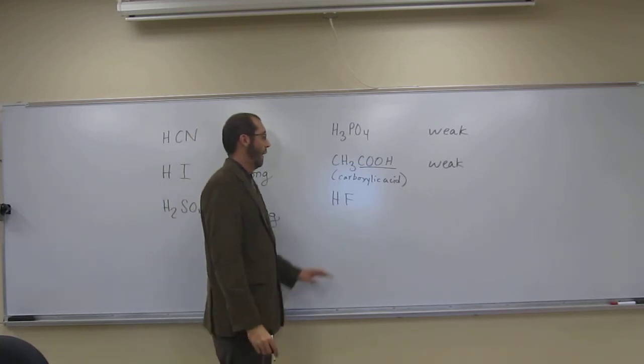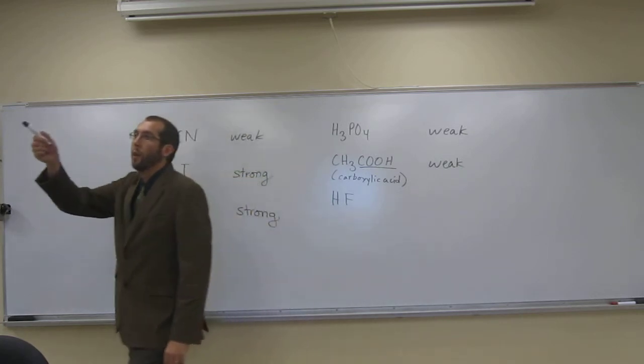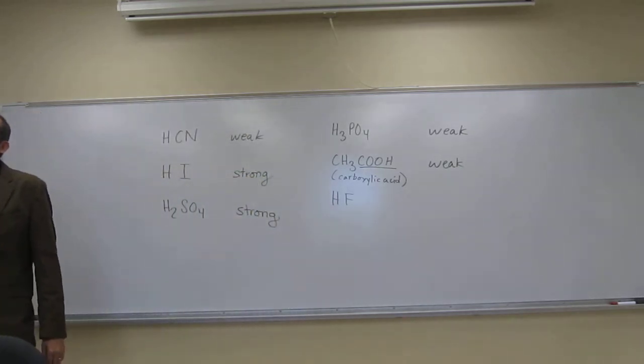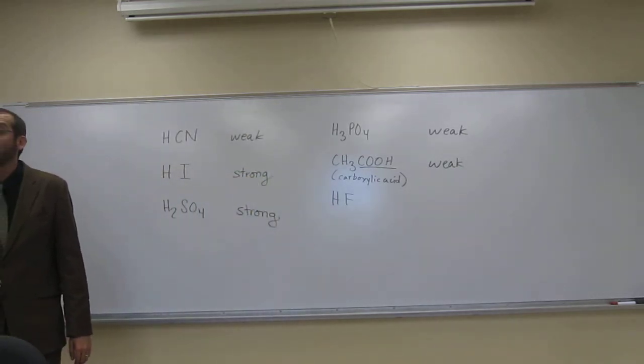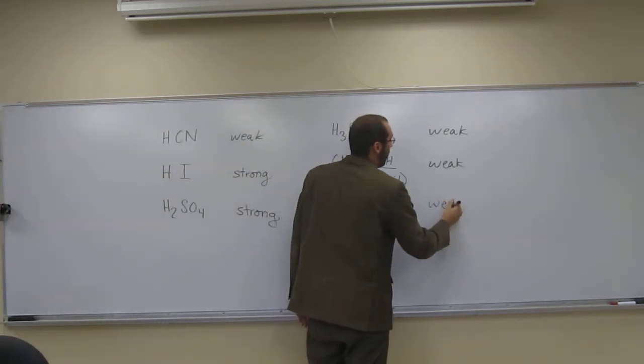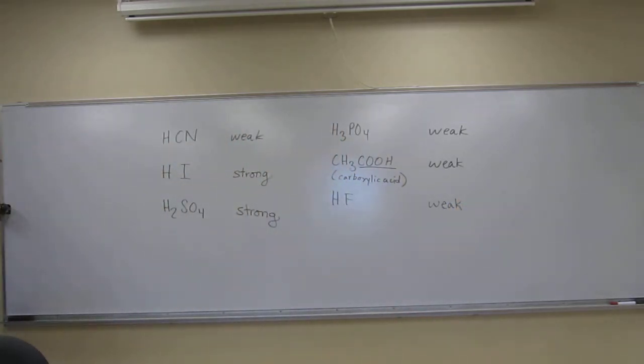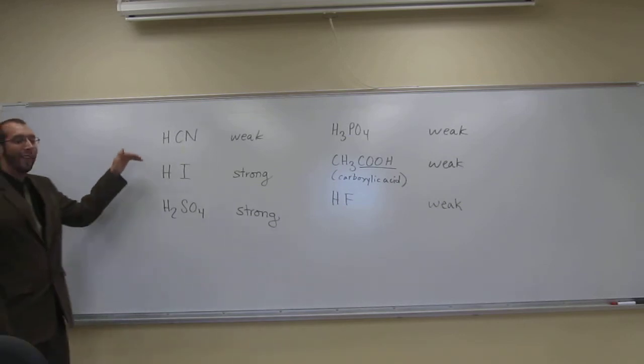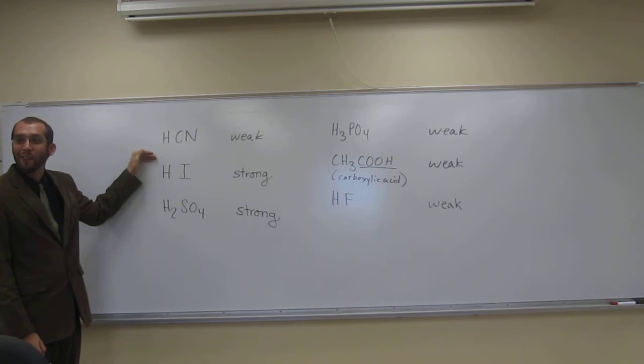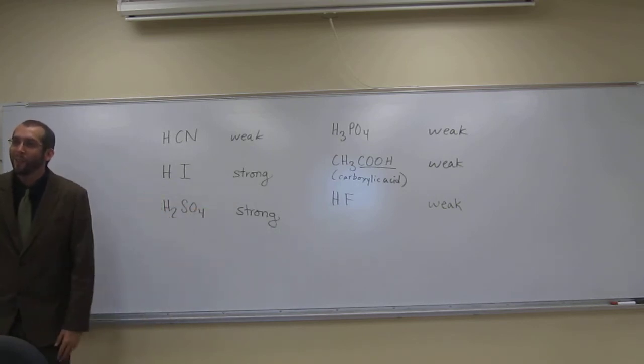So HF is a weak acid as well? And this, HF. That's what we said was, well, it's the only hydrohalogenic acid that's not a strong acid. So this is a weak acid. What did we say at the very beginning of this? So, the only hydrohalogenic acids that are strong are HCl, HBr, and HI. Is that one of those three? No. Okay, so it's a weak acid.